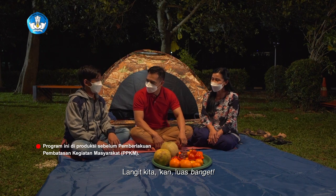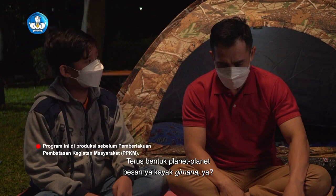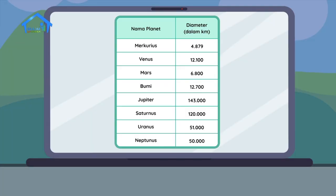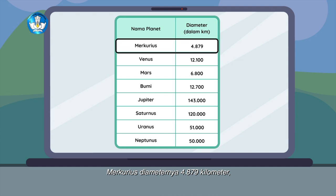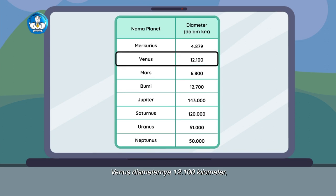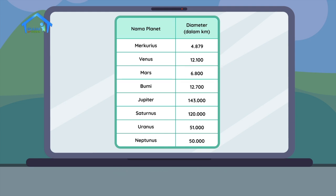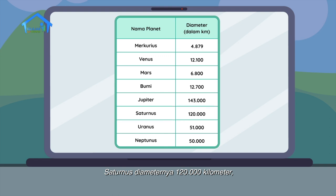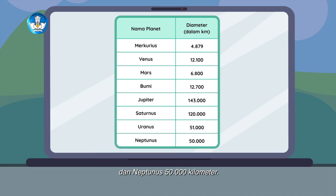Langit kita kan luas banget. Terus bentuk planet-planet, besarnya kayak gimana ya? Ukuran planet ini kan berbeda-beda. Sekarang kita amati tabel ini. Ini adalah ukuran diameter planet dalam kilometer: Merkurius diameternya 4.879 kilometer, Venus 12.100 kilometer, Mars 6.800 kilometer, Bumi 12.700 kilometer, Jupiter 143.000 kilometer, Saturnus 120.000 kilometer, Uranus 51.000 kilometer, dan Neptunus 50.000 kilometer.